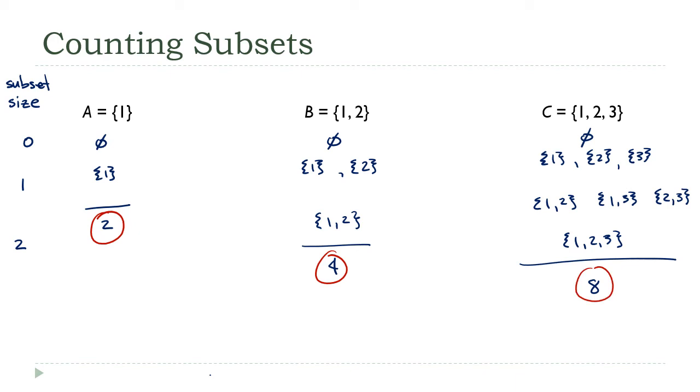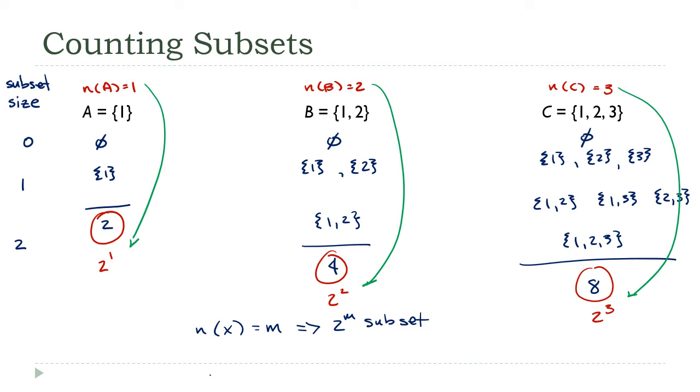Look for patterns. What are the sizes of my original set? The cardinality of A is 1, the cardinality of B is 2, and the cardinality of C is 3. Do you see a pattern? How about if I rewrite the numbers this way: make this one 2^1, this one 2^2, and this one 2^3. Now are you seeing a pattern? The size of the set always becomes the exponent. That's going to be my formula: if the cardinality of a set is M, then there are 2^M subsets.